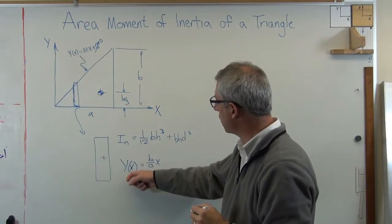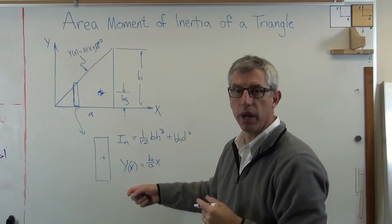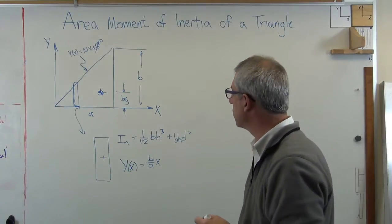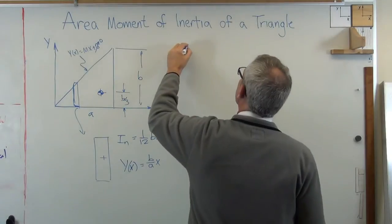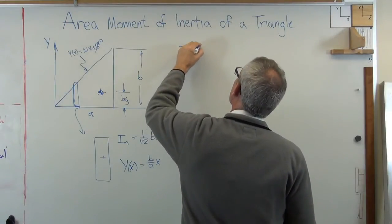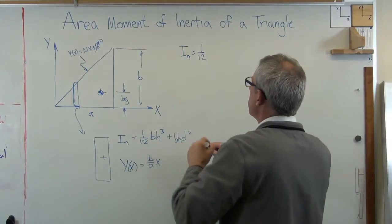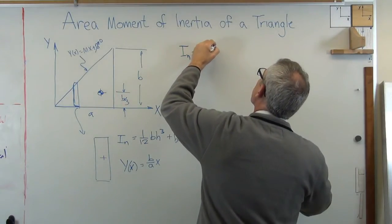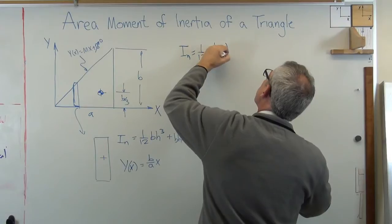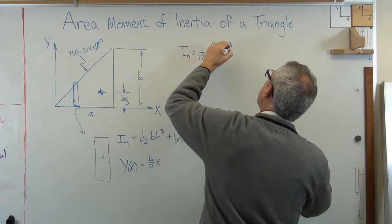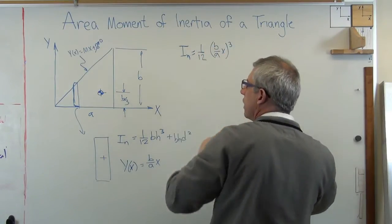So anytime I see a height, I'm going to put that in because that's height. I want height as a function of x. So let's put this up here. One-twelfth. I've got b over a times x cubed. That's the height.